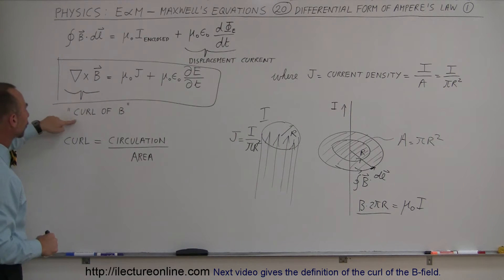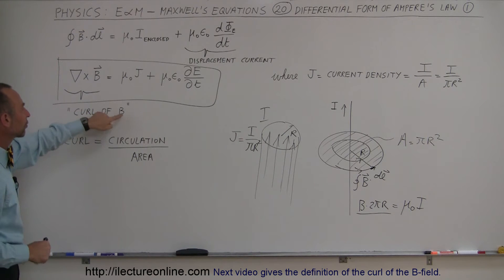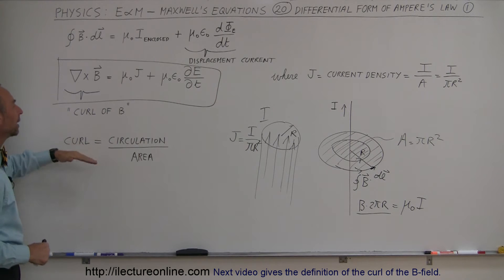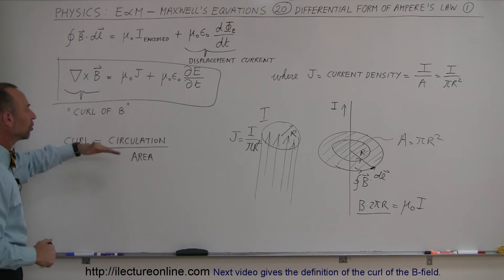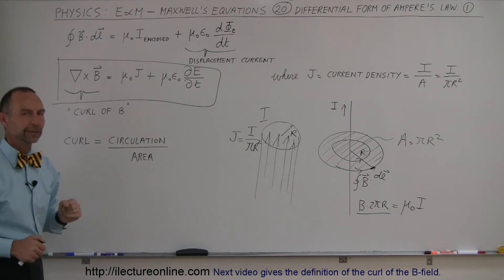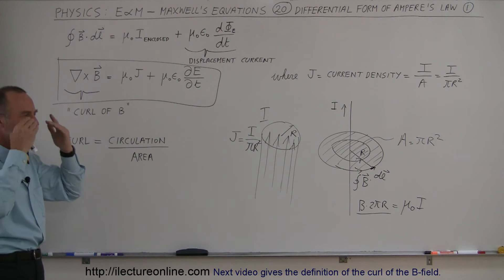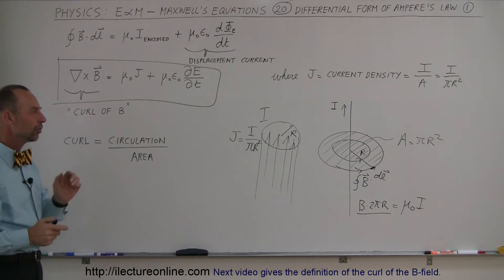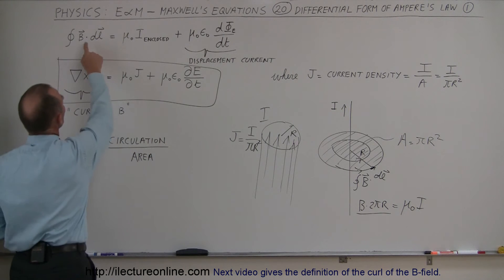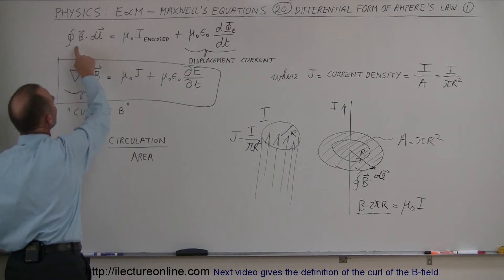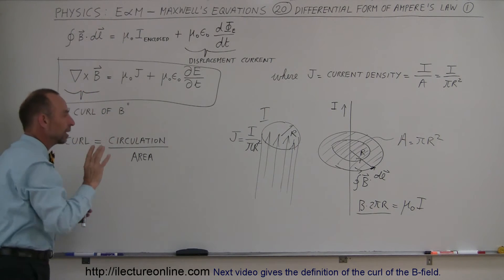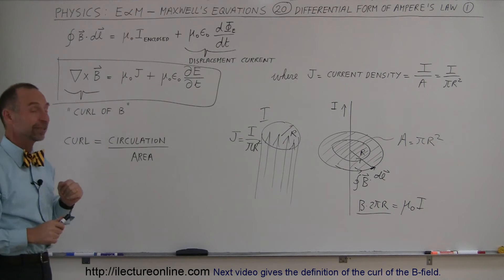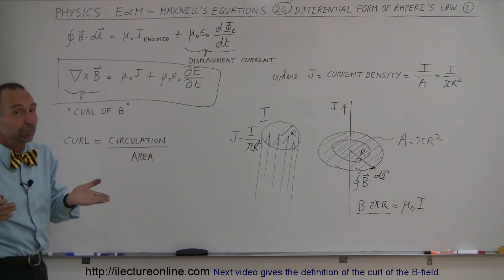The curl of vector B can be defined as the circulation divided by the area. The circulation is a term Maxwell came up with because he thought it was a good way to describe what actually happens in this situation. The circulation has a lot to do with what the line integral represents.